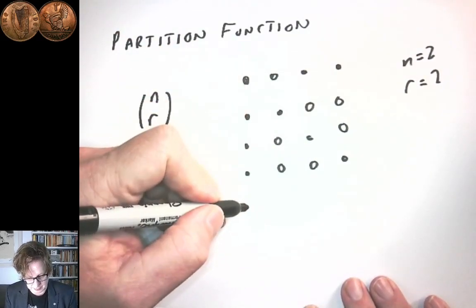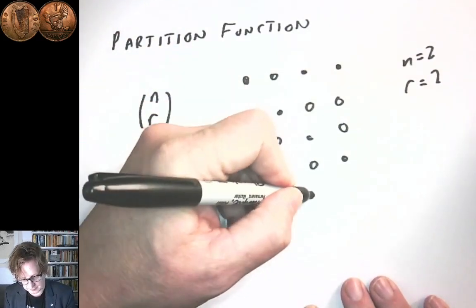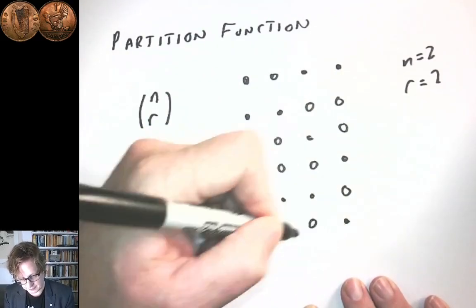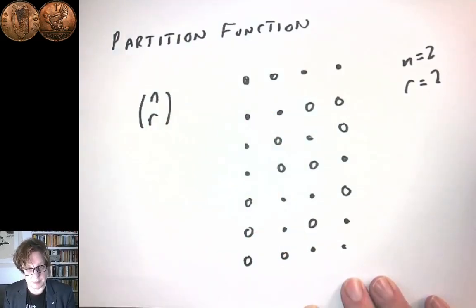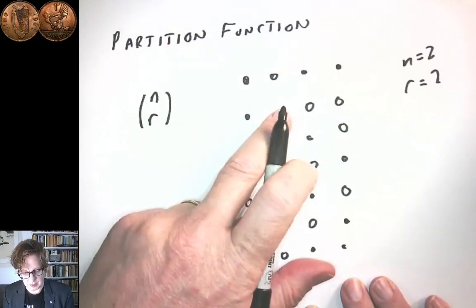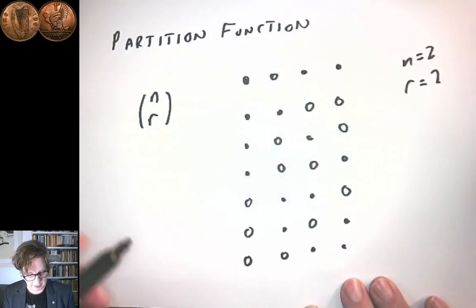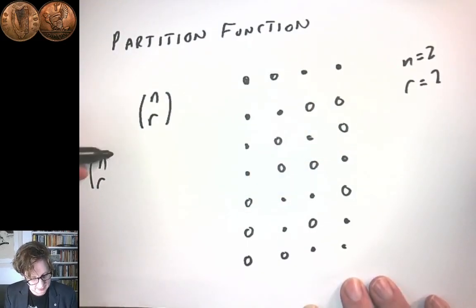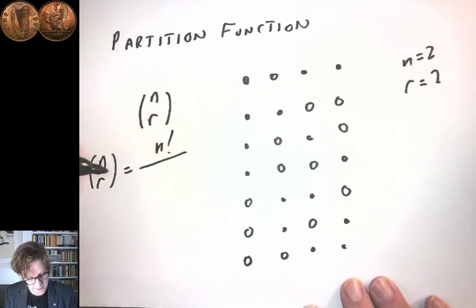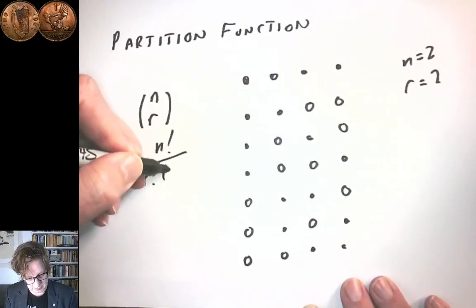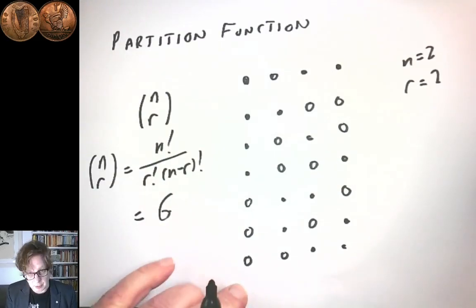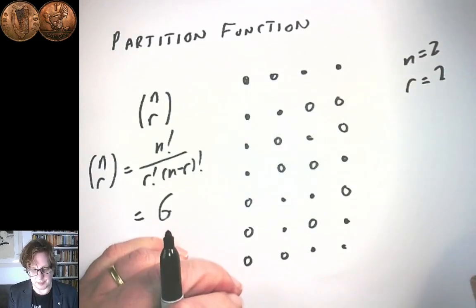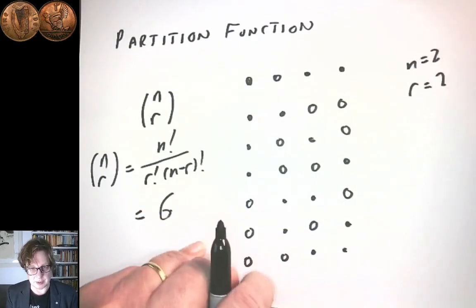These are just different ways you can do it. That's six different divisions of the original four elements into two groups — the ones we're putting into the subset and the ones we're leaving out. And of course n choose r equals n factorial over r factorial times (n minus r) factorial, which in this case is equal to six. So the binomial coefficient is an example of a partition function — a function that counts the number of ways you can split a set up into different subsets.